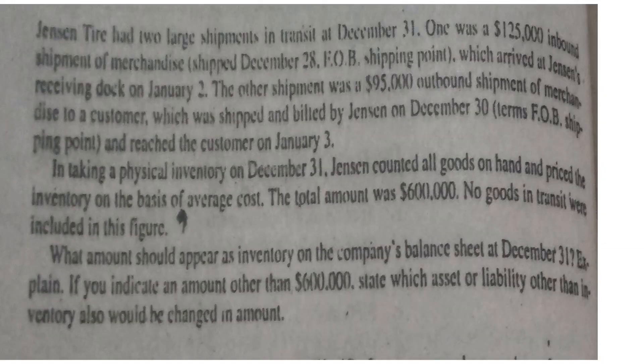Moving on to the next question: Jensen Tire had two large shipments in transit at December 31st. One was a $125,000 inbound shipment of merchandise — goods coming from suppliers — shipped FOB (freight on board) shipping point on December 28th, which arrived at Jensen's receiving dock on January 2nd.